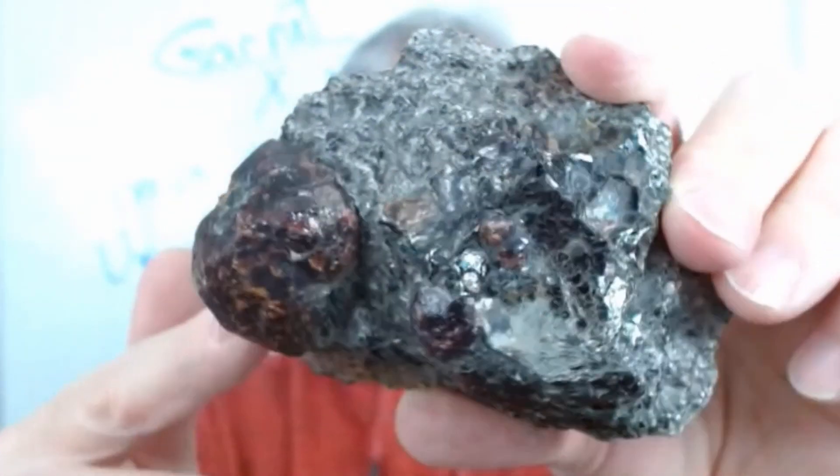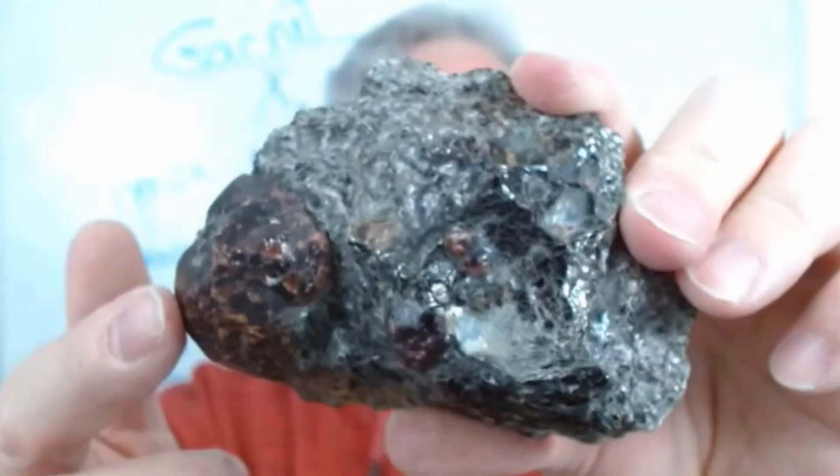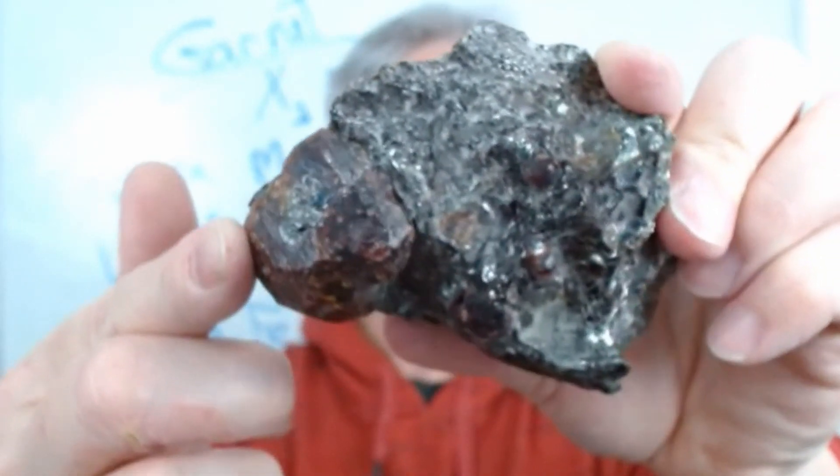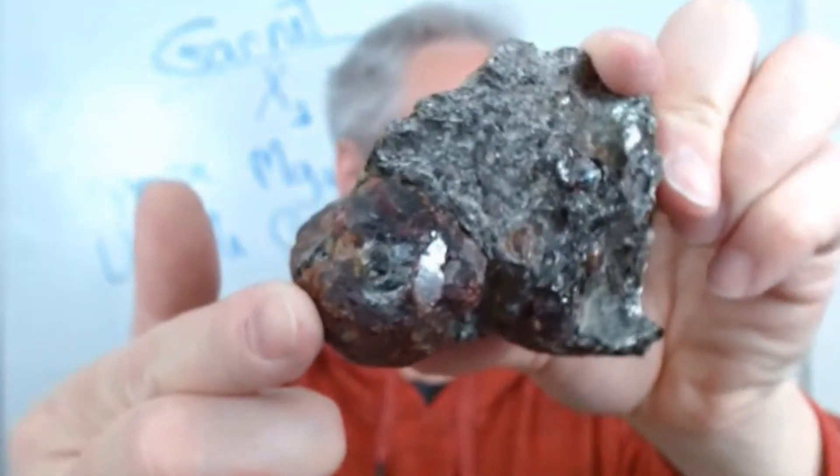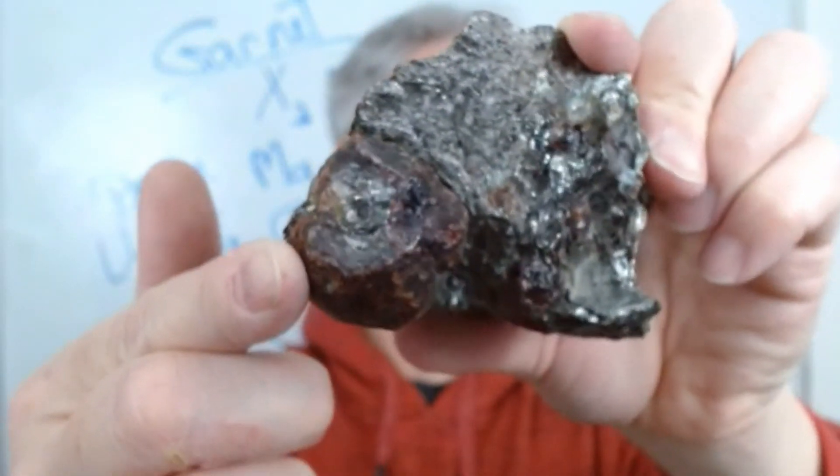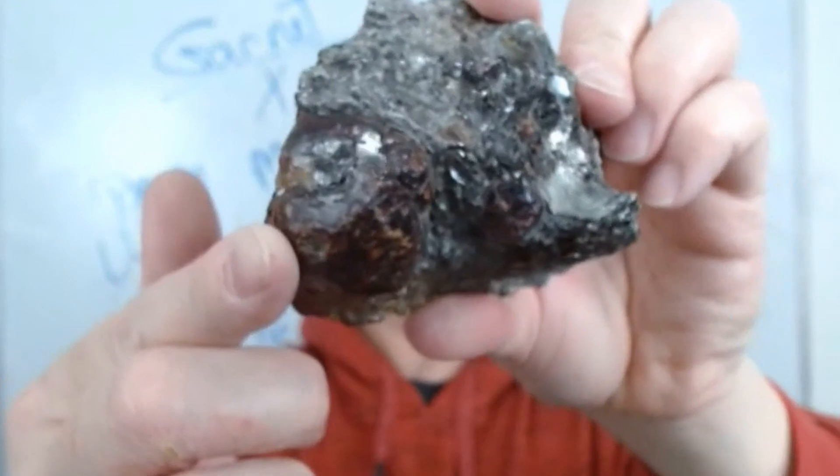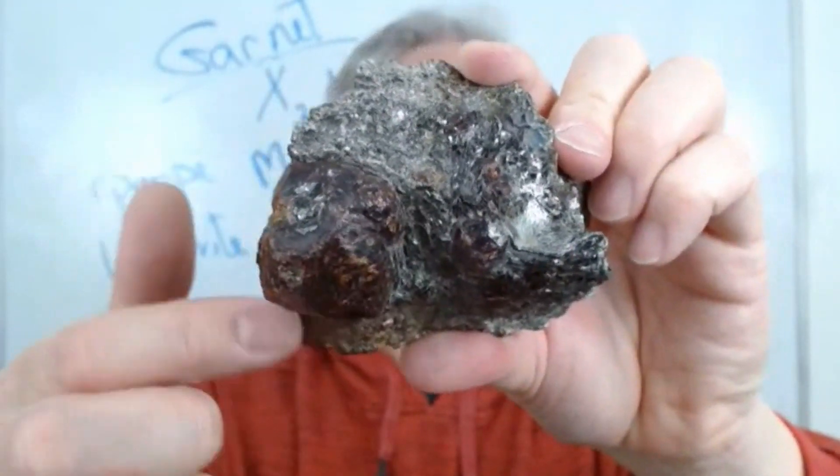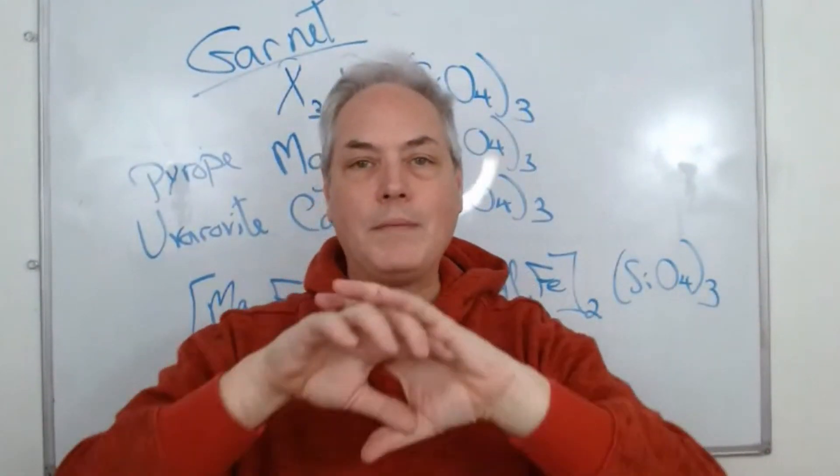This is an example of a metamorphic rock with garnet. If I turn around you could see some faces that are shining because we have in this sample - see the garnet right there, and another one right here.